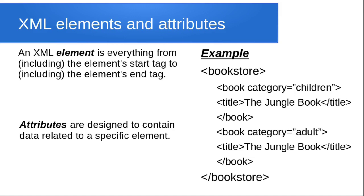An XML element is everything from the element's start tag to the element's end tag. In the example, from the opening bookstore tag to the closing bookstore tag everything is an element, including all its children. An attribute is designed to contain data related to a specific element — for the 'book' element, 'category="children"' is shown, where 'category' is the attribute and 'children' is its value.